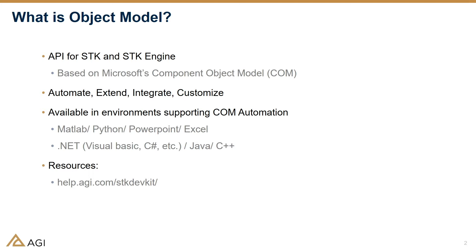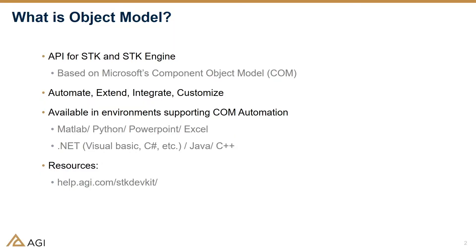It's not just some small API where you can only do a few basic things. You can use the object model with pretty much any programming language — MATLAB, Python, PowerPoint, Excel, .NET, C#, Java — you name it. Where can you find out more? We have a whole help system dedicated to the object model and the API for SDK. It's at help.agi.com/sdkdevkit. Go there for plenty of examples and documentation.